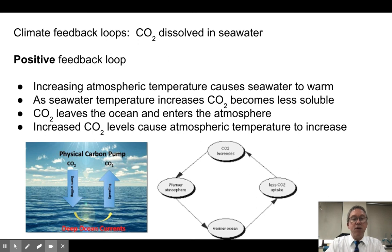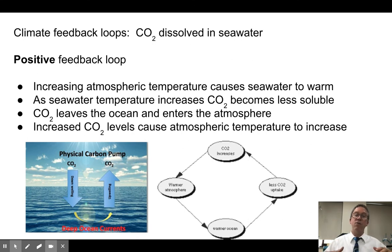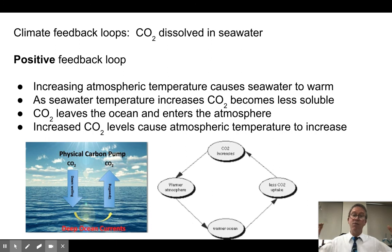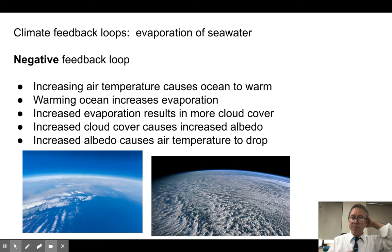Another positive feedback loop involves CO2 and the ocean's carbon pump. CO2 dissolves into and out of the ocean, but cold water dissolves gases better than warm water. As air temperature increases, the ocean warms and takes in less CO2, releasing some it already has. That raises atmospheric CO2, which traps more heat, making the atmosphere and ocean hotter, causing the ocean to release even more CO2 and absorb less — a positive feedback loop accelerating warming.